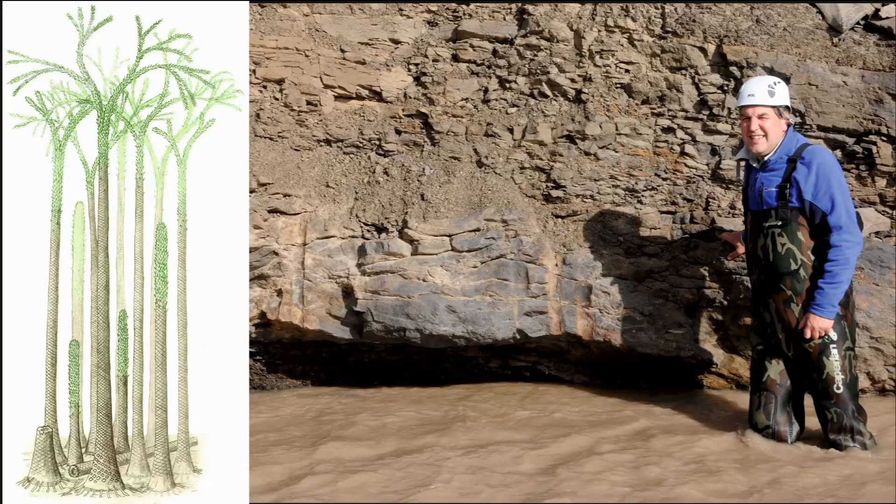But how do we reconstruct those plants into forests — into their original ecology? We've been lucky enough that there are three places in the world where we can see these ancient forests and the bases of the trees preserved exactly where they were when they were alive, 380 to 385 million years ago. One of those is in Spitsbergen, where we can see the bases of club moss trees — lycopods — looking very much like a miniature version of the coal forests of South Wales in the Carboniferous.